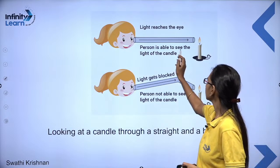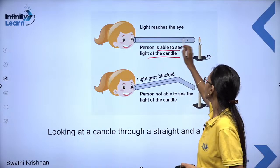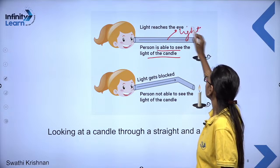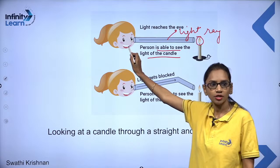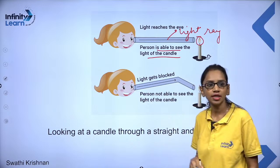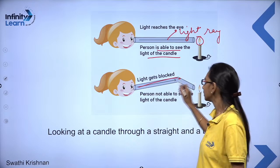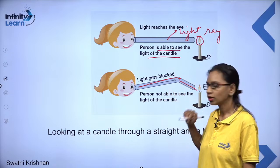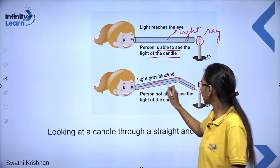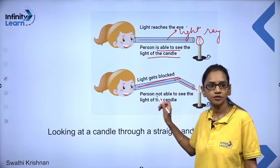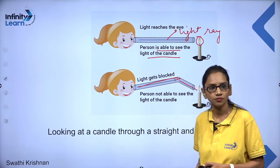Here a person is able to see the light ray, and you can see the candle flame if you are looking through the straight pipe. But when you use the bent pipe, the light ray hits the wall and is not going straight — that is why the person is not able to see the candle. The light ray hits the bend and does not go straight through. This is the basic experiment about looking at a candle through a straight and a bent pipe.